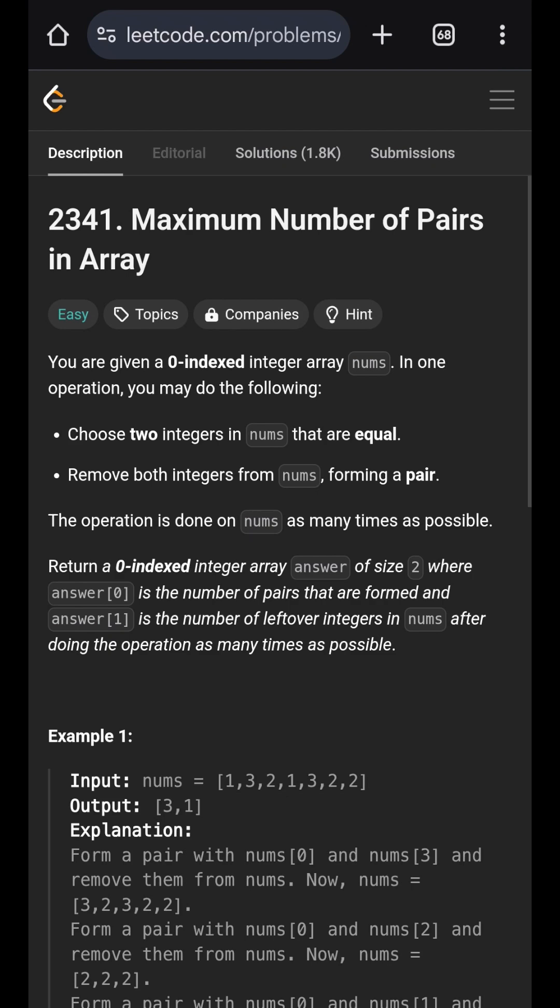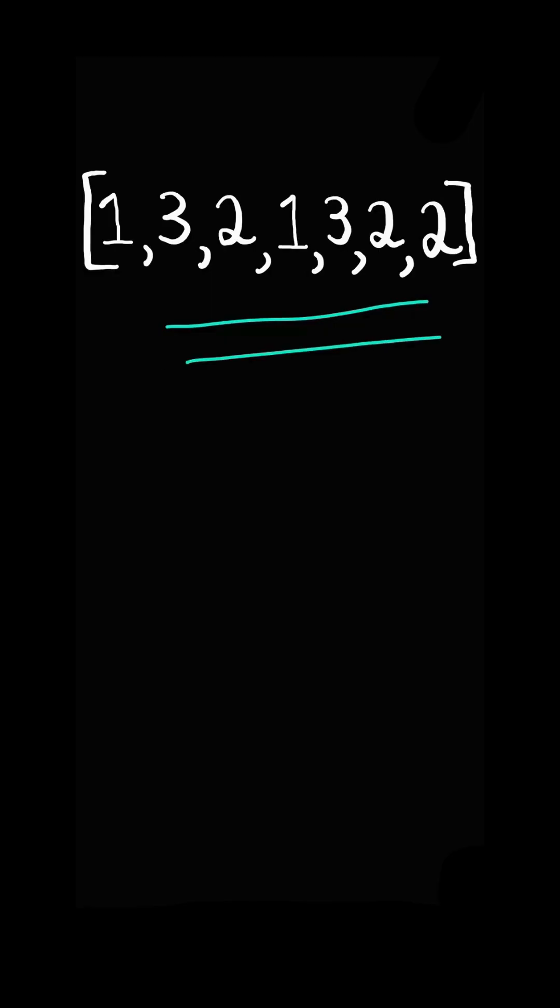Maximum number of pairs in array. Given an integer array, choose two integers that are equal and remove them. This forms one pair.